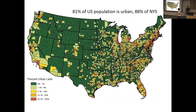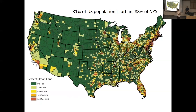81% of the US population is urban, and in New York State, 88% of the population lives in urban areas. In urban areas, you have lots of impervious surfaces — roads, buildings, cars, sidewalks, parking lots. That's where most of these impacts will be felt and how we can mitigate them. As we see what's happening in North Carolina and South Carolina in terms of flooding, a lot more of this is happening in urban areas where infiltration is very poor.